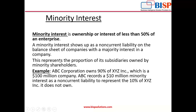This represents the proportion of subsidiaries owned by minority shareholders. Minority interest means ownership of less than 50% of an enterprise, and it is held by an investor other than the parent company. For example, ABC Corporation owns 90% of XYZ Incorporation, which is a $100 million company. ABC records a $10 million minority interest.